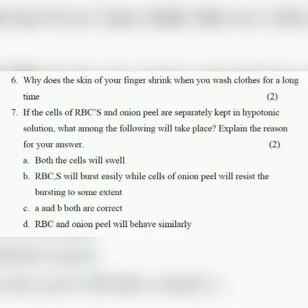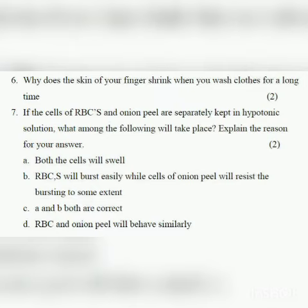Question number 7: If the cells of RBCs and onion peel are strictly kept in a hypotonic solution, what among the following will take place? Explain the reason for your answer. A: Both the cells will swell. B: RBCs will burst easily while cells of onion peel will resist the bursting to some extent. C: A and B both are correct. D: RBCs and onion peel will behave similarly.